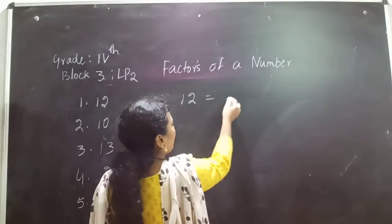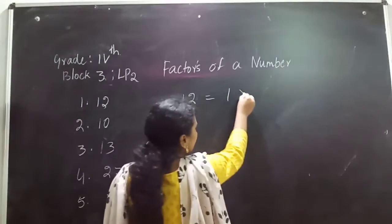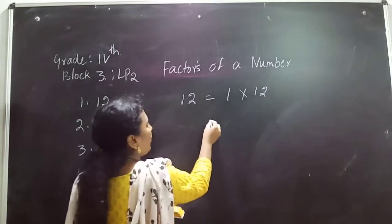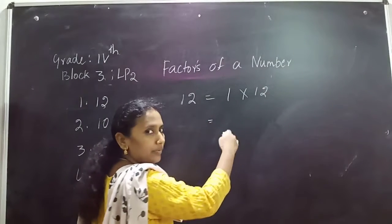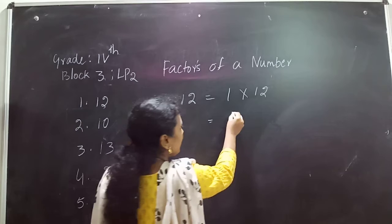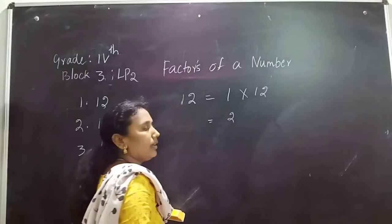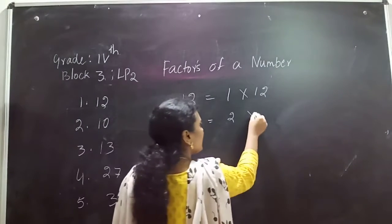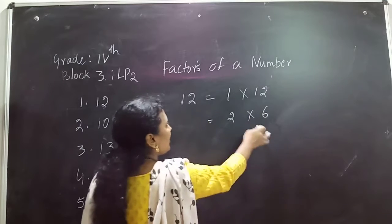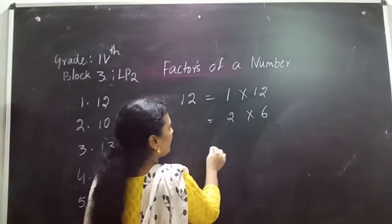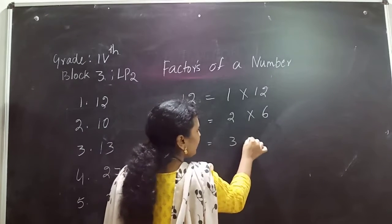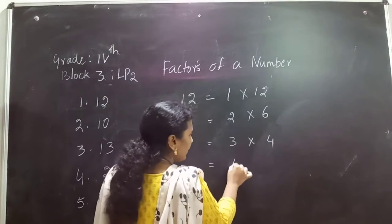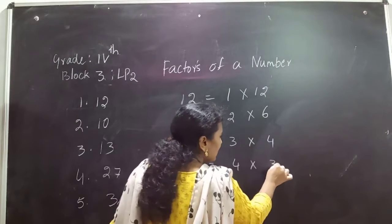First, go with the number 1. 1 times 12 is 12. Next, go to the number 2. Is 12 there in the 2 times table? Yes. 2 times 6 is 12. Go for the number 3. 3 times 4 is 12. Again, go for the number 4. 4 times 3 is 12.